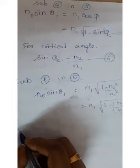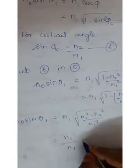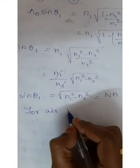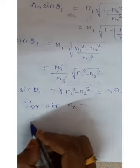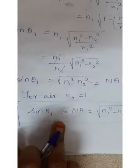Taking the LCM inside the root: N0 sine theta1 equals N1 times root of (N1 squared minus N2 squared) divided by N1 squared. The N1 terms cancel, giving N0 sine theta1 equals root of (N1 squared minus N2 squared). This is the numerical aperture equation. Since the refractive index of air N0 equals 1, we get: sine theta1 equals numerical aperture equals root of (N1 squared minus N2 squared).